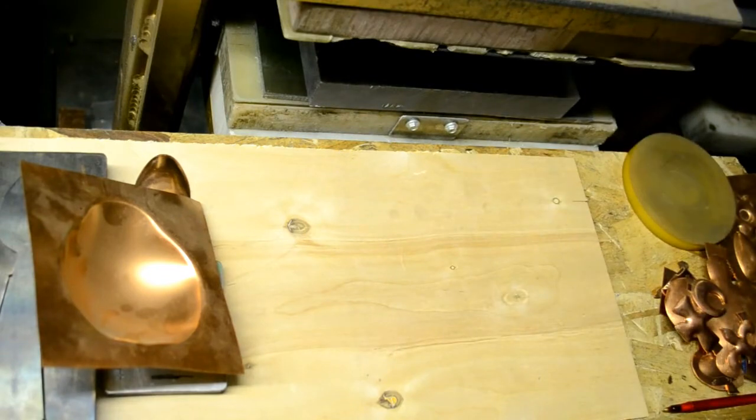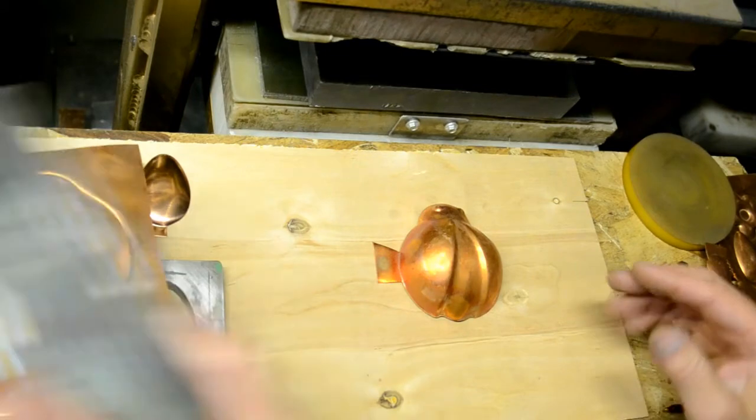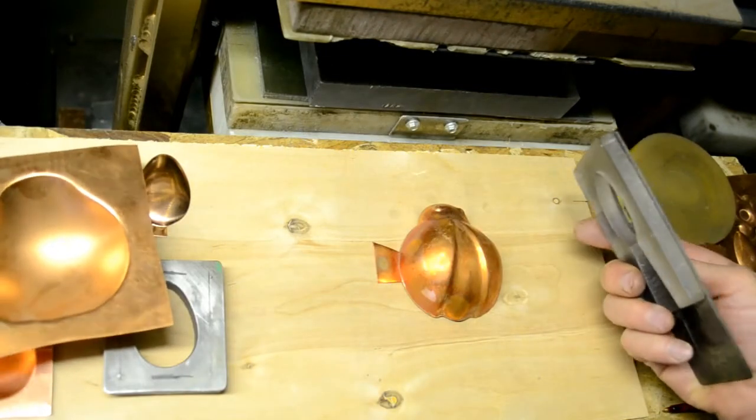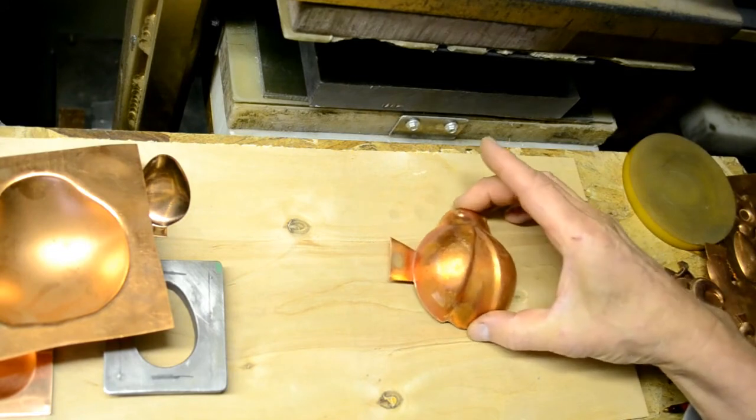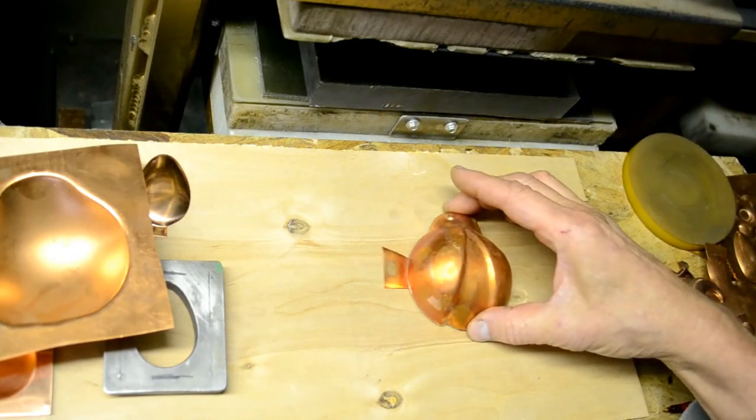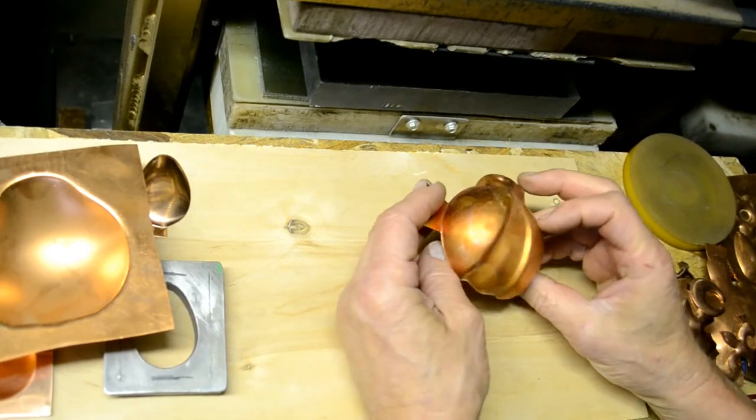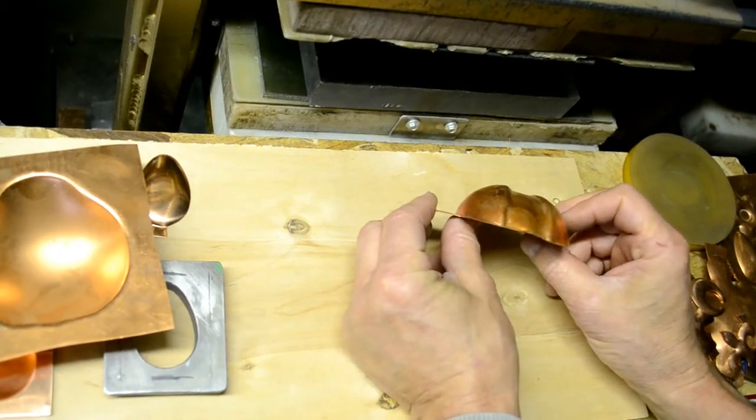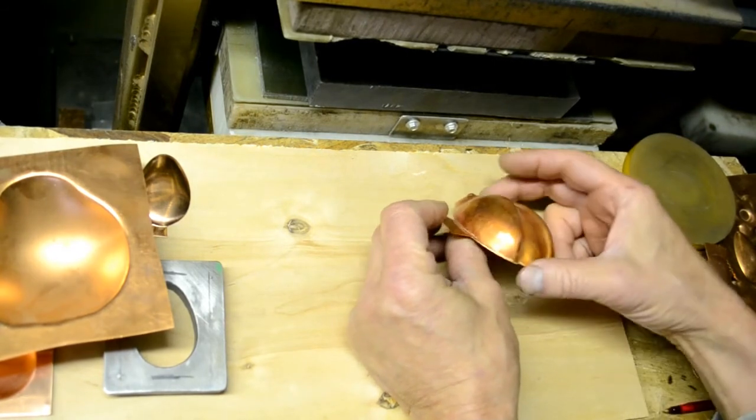That still leaves you this flat flange like we just saw. And the third step was to take that and put it in a pancake die, a bigger version of this with a thicker block, like an inch thick, to trim away that flat border.